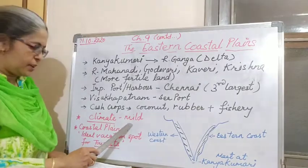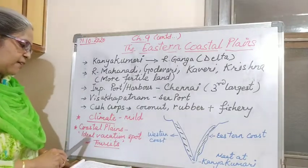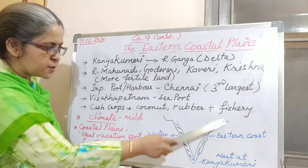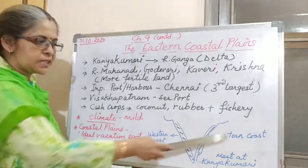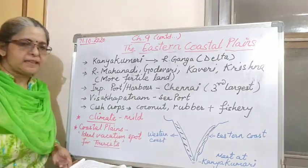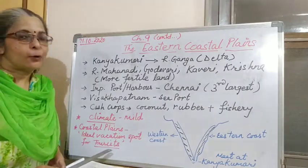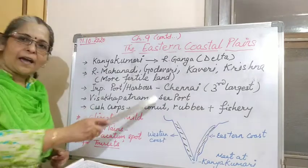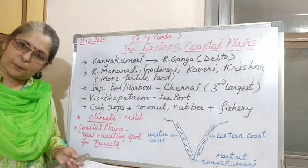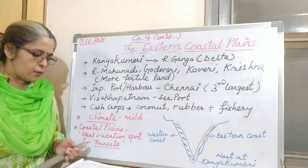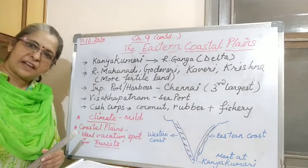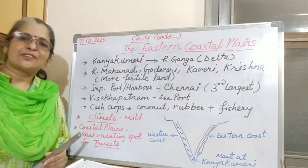The climate is mild throughout the year. Coastal plains have ideal vacation spots for tourists. Both the coast lines meet at Kanyakumari, which is another name for Cape Comorin. In the third session we will cover India's islands. Please open your textbooks, read, and go through the videos properly.